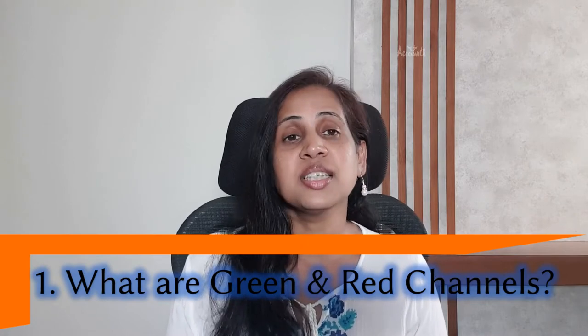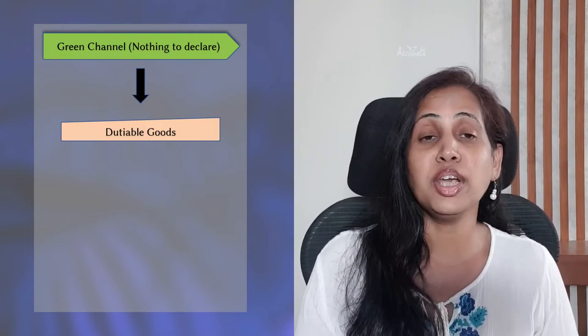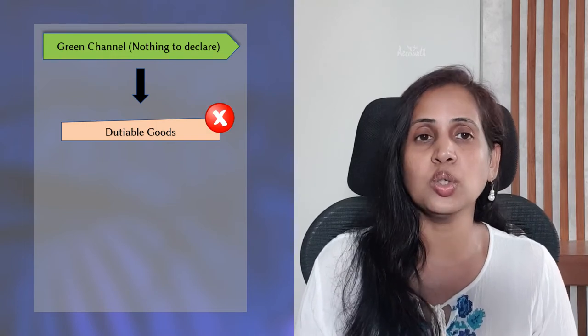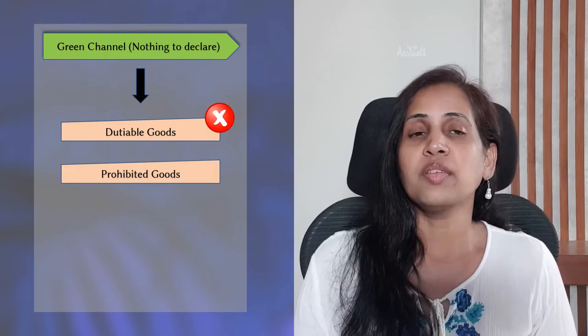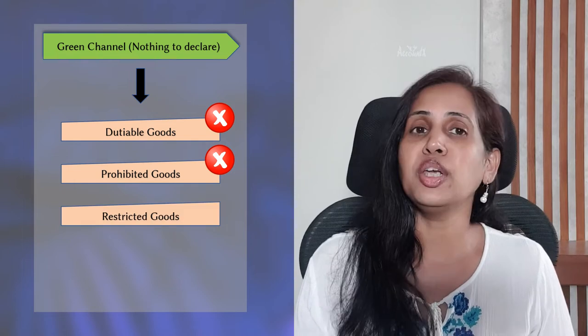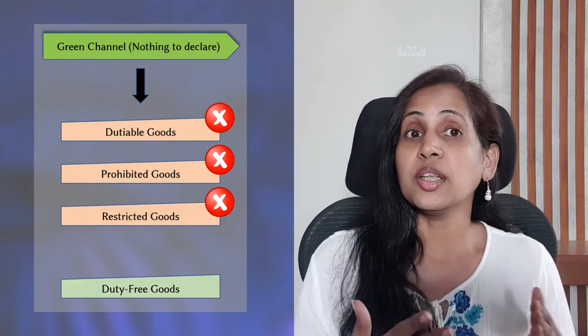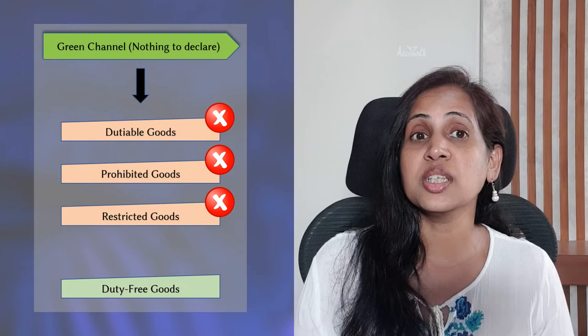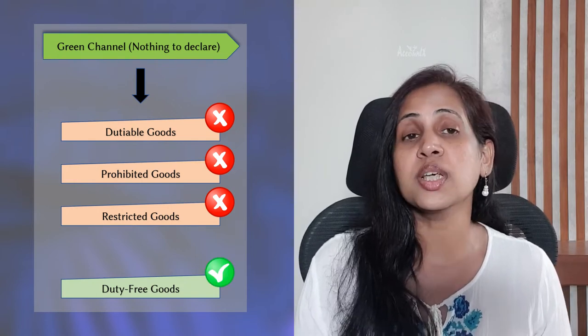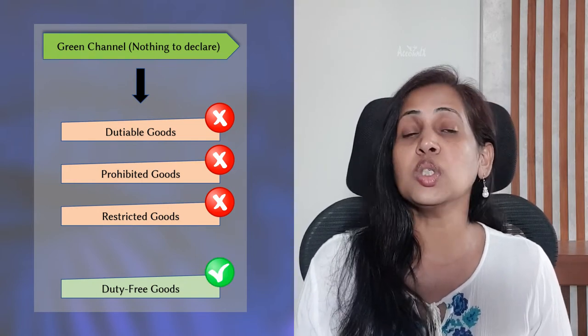Let's now start this episode and understand what are these green and red channels, starting with the green channel. You can use the green channel when you have nothing to declare — that is when you have no dutiable goods, when you don't carry prohibited goods, and when you don't have restricted goods. In other words, if your baggage consists of only duty free goods, you can use the green channel.